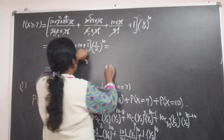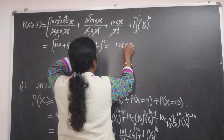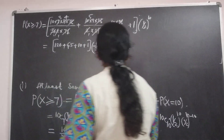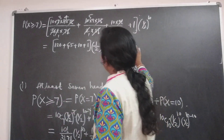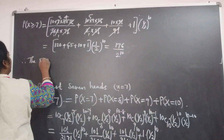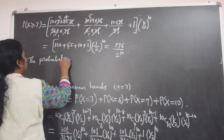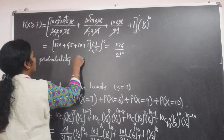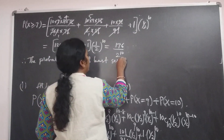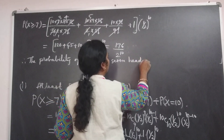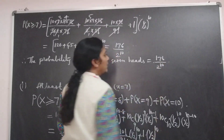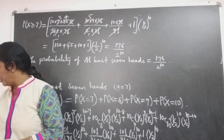Therefore, the probability of at least seven heads is equal to 176 / 2^10.